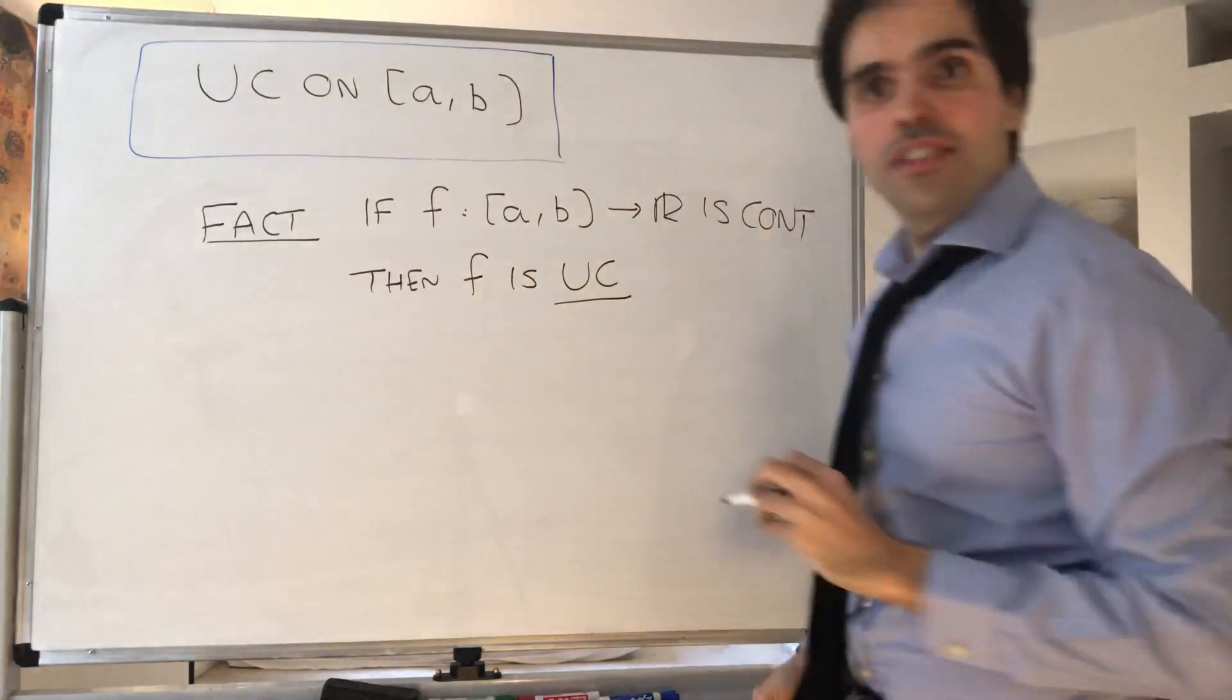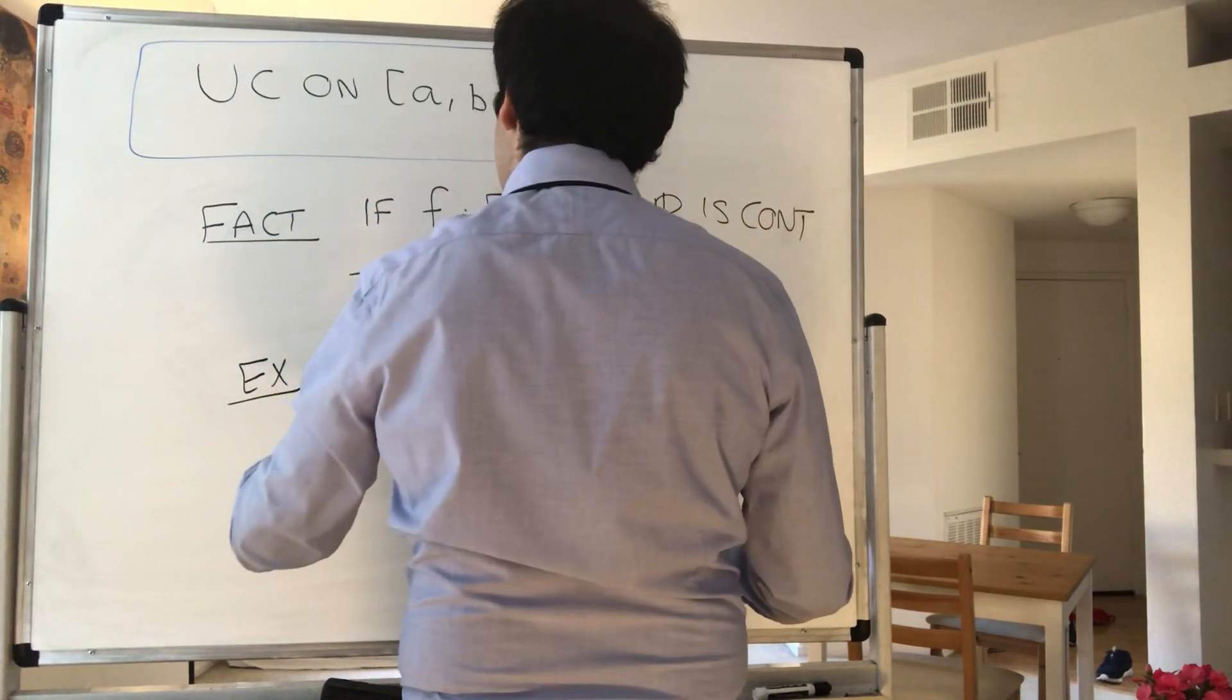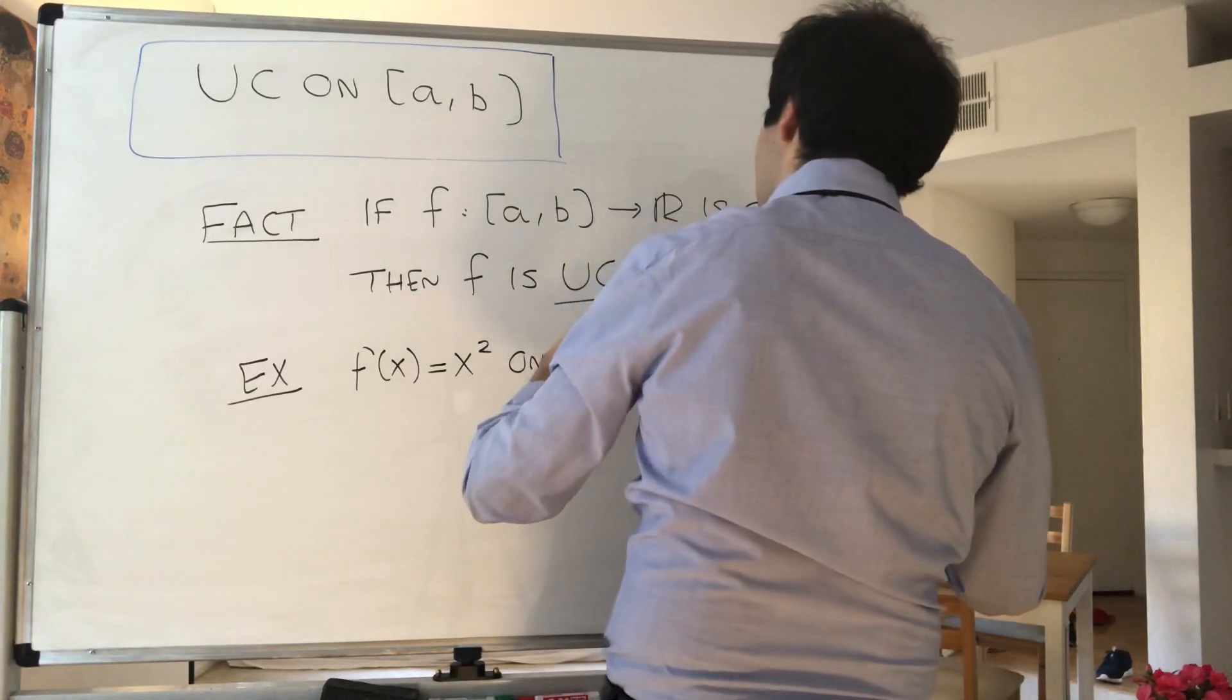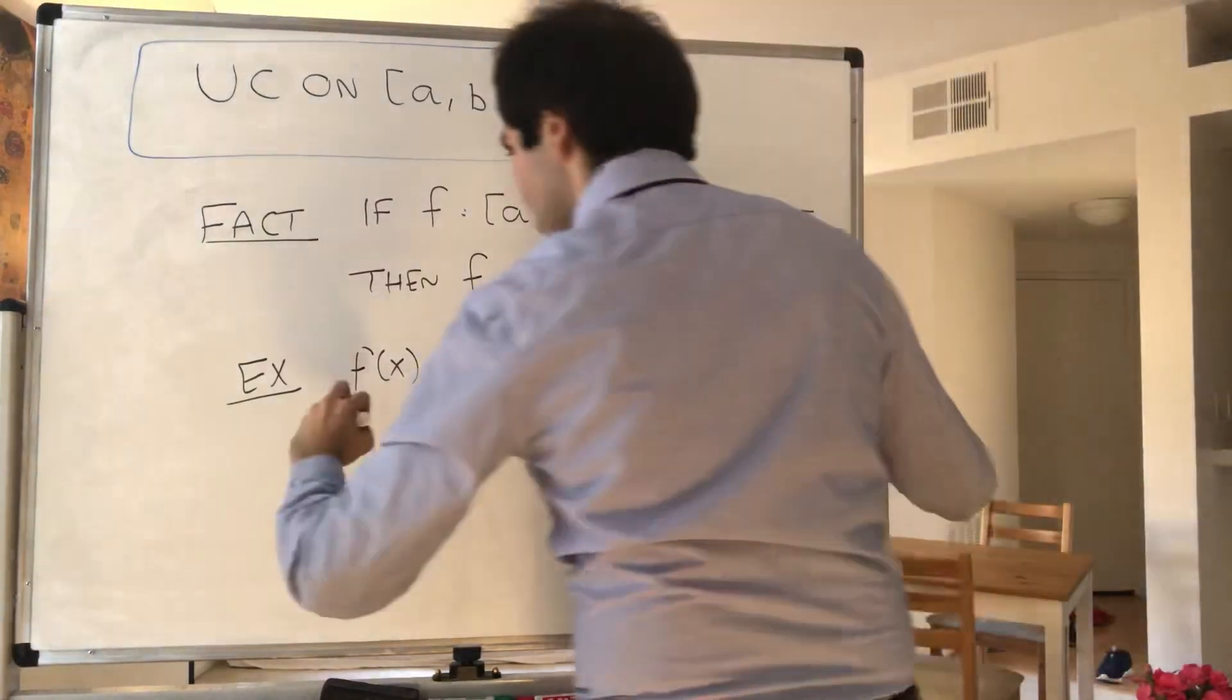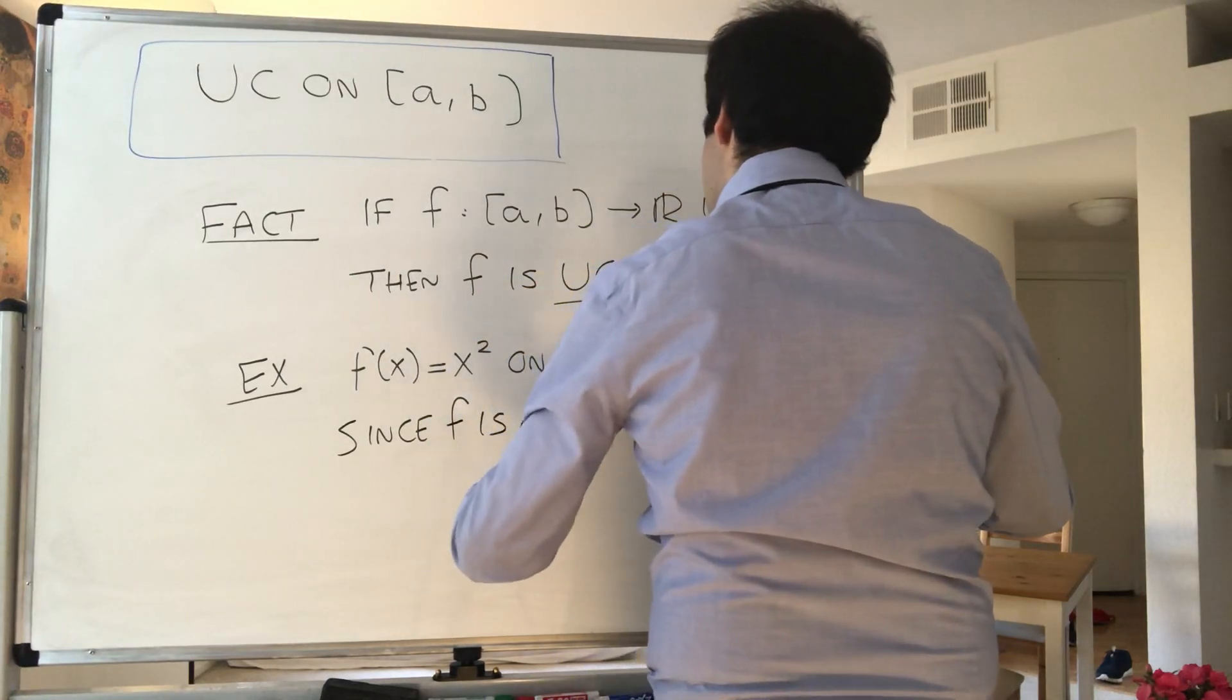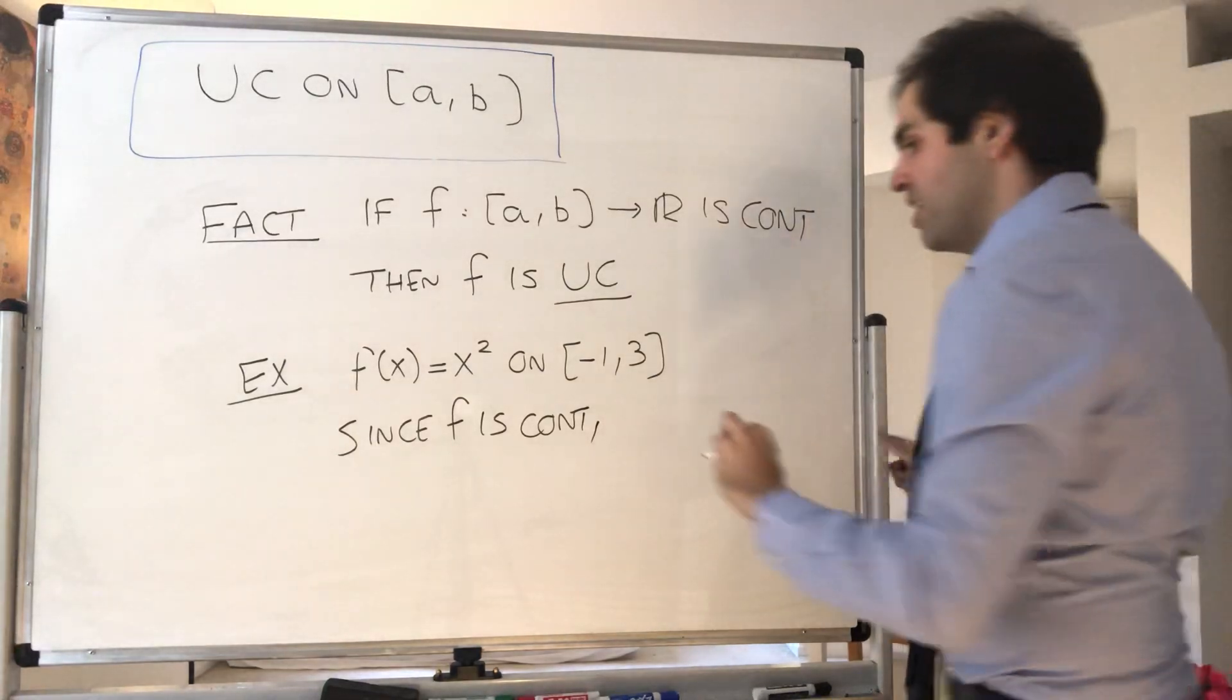For instance, consider an example I've already done. Consider f(x) = x² on the interval [-3,3]. Well, this function is continuous, so we actually get that f in this case is uniformly continuous.